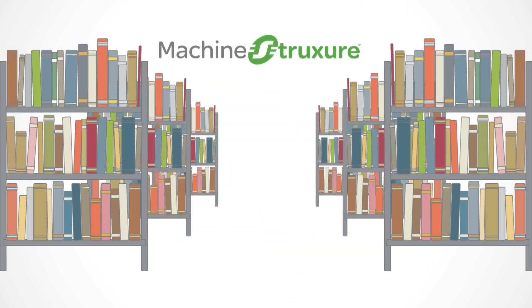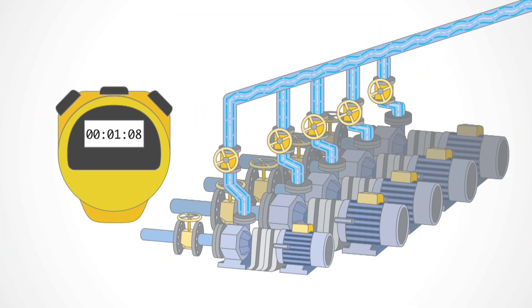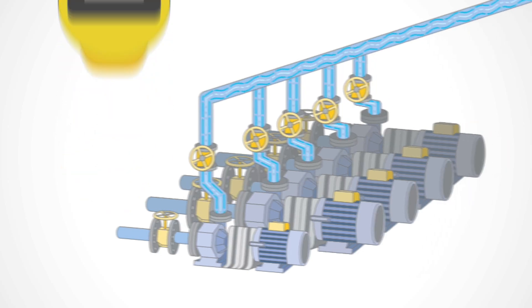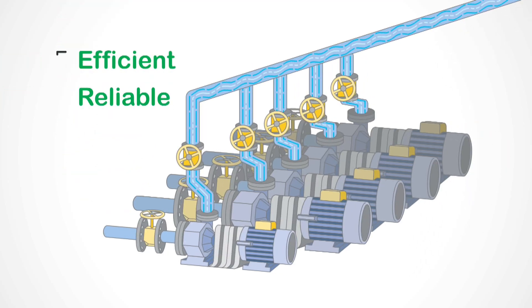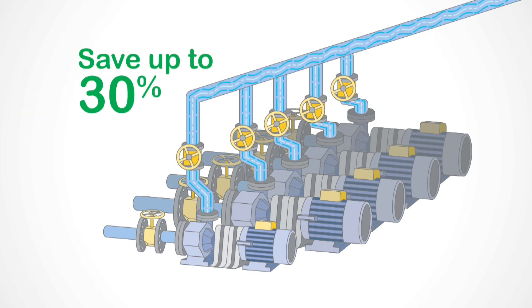The Pumping Automation Solution, based on Machine Structure and its comprehensive library of pre-programmed function blocks, allows you to not only design and build machines more quickly, but also helps you offer pumping systems that are more efficient, reliable, and offer up to 30% in energy savings.